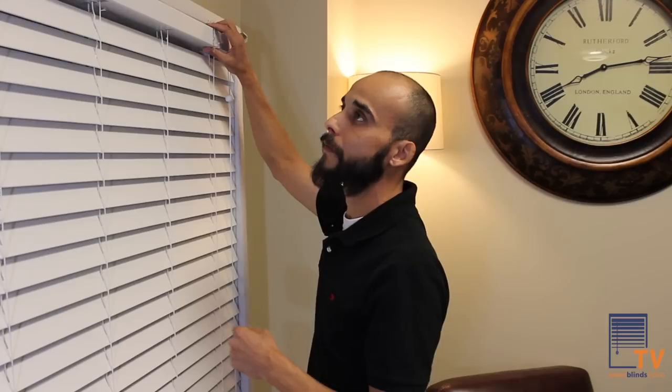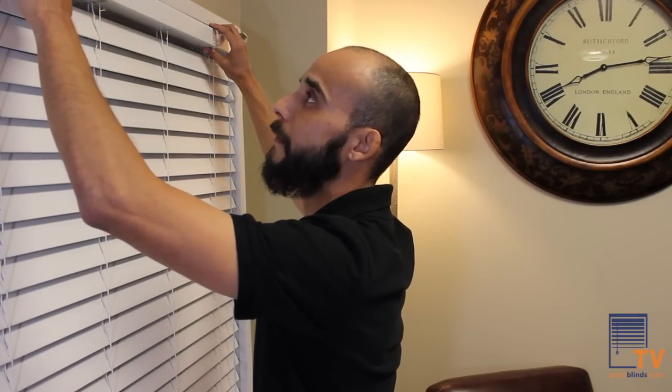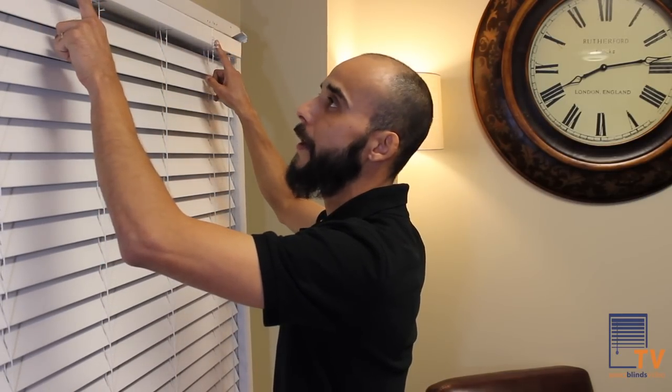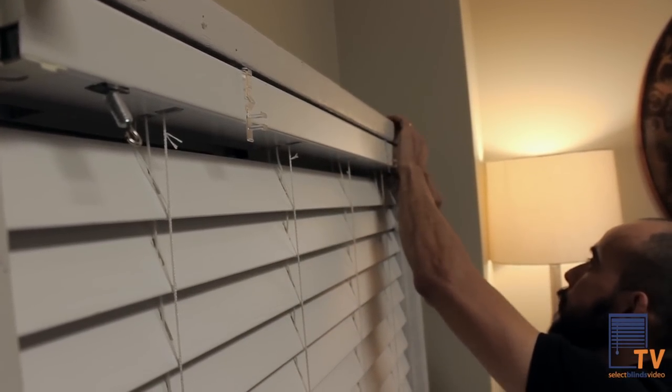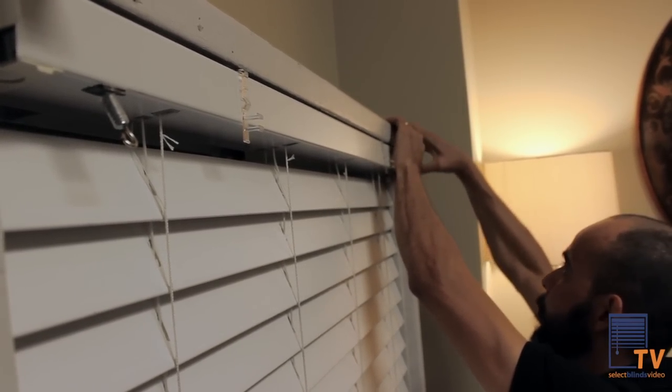I already have one balance clip on here. I have the other one set. Once I have the balance clips on the head rail, you can slide your head rail back into the brackets. Pull down on the hinges.